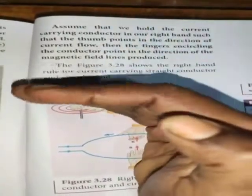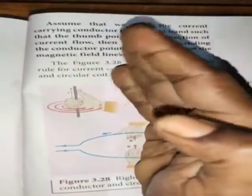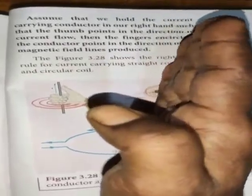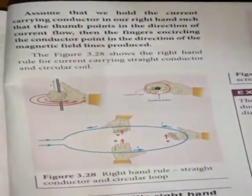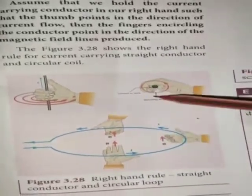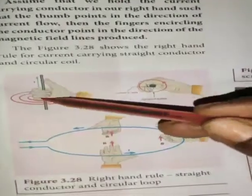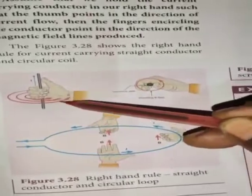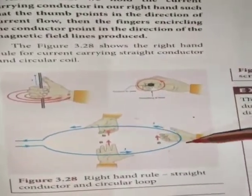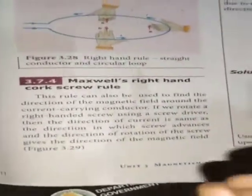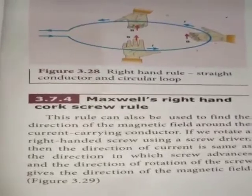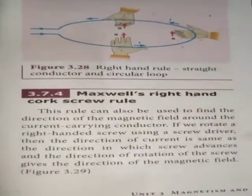The fingers encircling the conductor point in the direction of the magnetic field lines produced. This figure shows the right hand rule for a current carrying straight conductor and circular coil, giving the direction of the magnetic field.